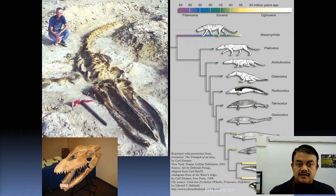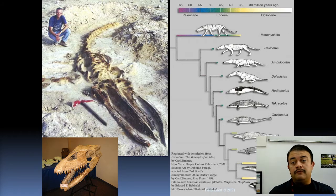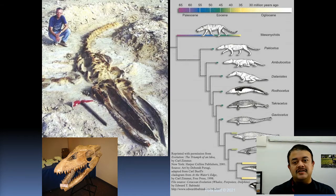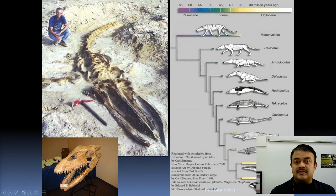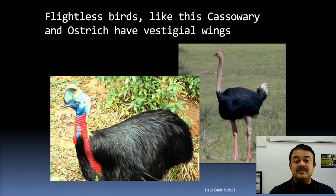Looking at dolphin and whale evolution, a large number of fossils have been found in the Kutch area of Gujarat and in Pakistan, which is an epicenter of this fossil diversity. These fossils show that the whale had been a land animal, with its return to the ocean being a secondary adaptation.